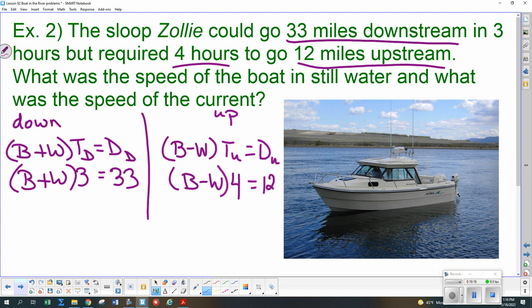Okay. So let's distribute on both of those. 3B plus 3W is 33. 4B minus 4W is 12. Now, what do you want to do? But hang on. So a common factor of 3 on the first one. So divide everything by 3. Sound good to the rest, Addy? Thumbs up? Thumbs down? That'll give us some nice small numbers here.